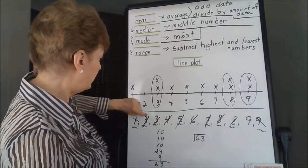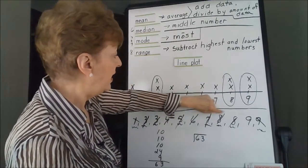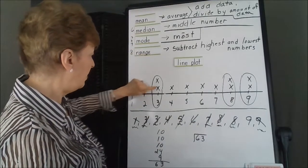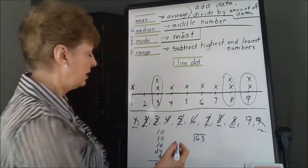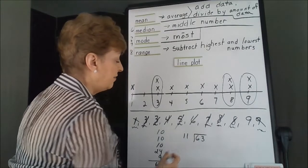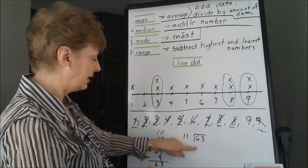So we have 1, 2, 3, 4, 5, 6, 7, 8, 9, 10, 11 numbers. So we're going to have to divide 63 by 11.